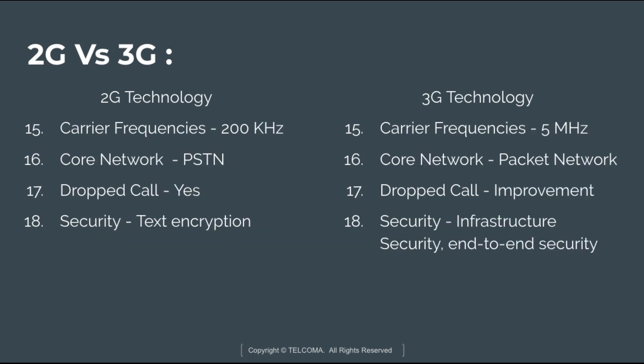In 2G technology the carrier frequency used is 200 kHz, and in 3G technology the carrier frequency used is 5 MHz. In 2G technology the core network is PSTN, whereas in 3G technology the core network is a packet network.